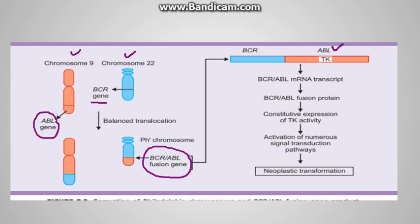The ABL part contains tyrosine kinase expression. When it fuses with BCR, it leads to constitutive expression of the tyrosine kinase enzyme — because tyrosine kinase was not always active when ABL was alone, but now with the fusion gene there is constitutive expression. This activates many signal transduction pathways, increases cellular proliferation, decreases the apoptosis rate, and therefore forms a neoplasm — in this case, CML.